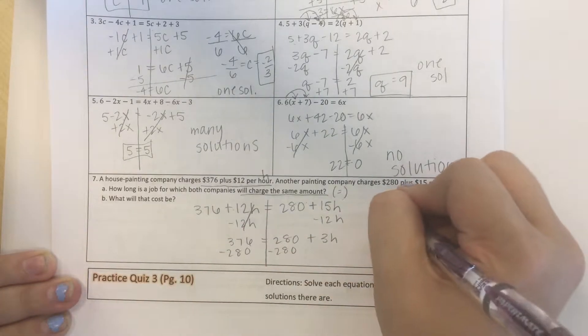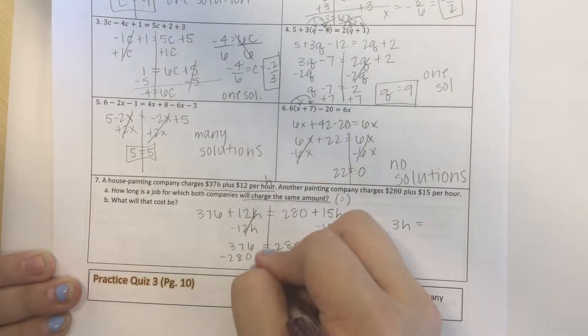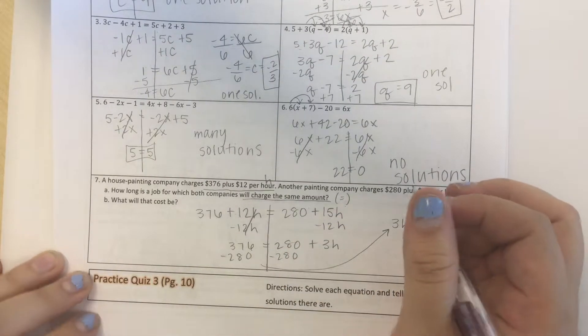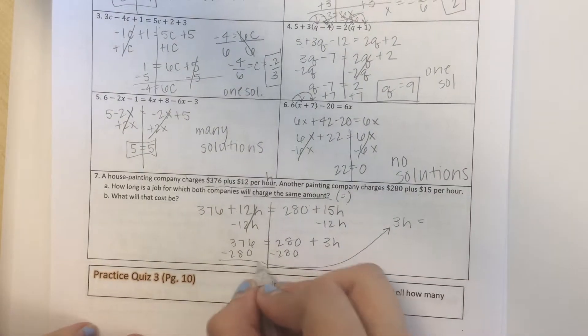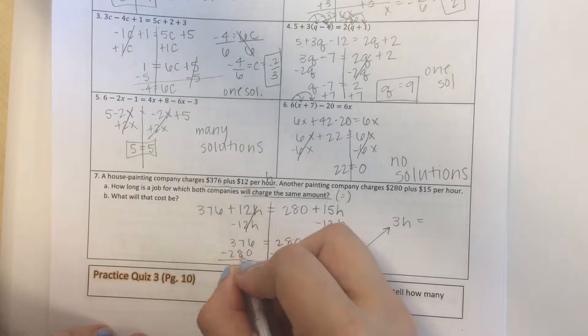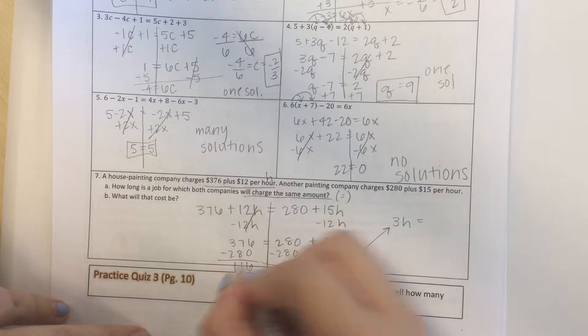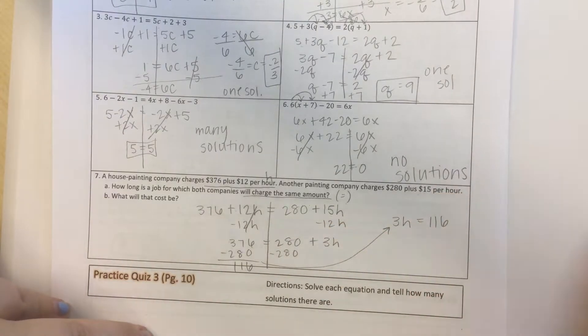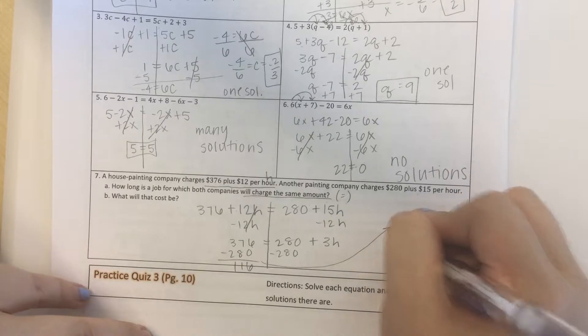I'm going to run out of room here. So $3h equals, I'm just going to draw a little arrow. So $376 minus $280, well $6 minus $0 is $6, $7 minus $8 is $1, $3 minus $2 is $1. So $116 divide by $3.